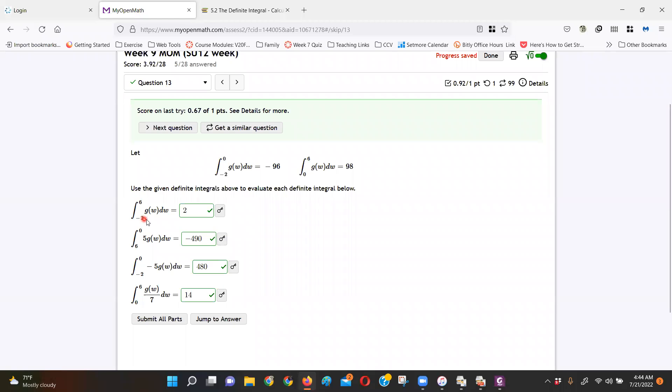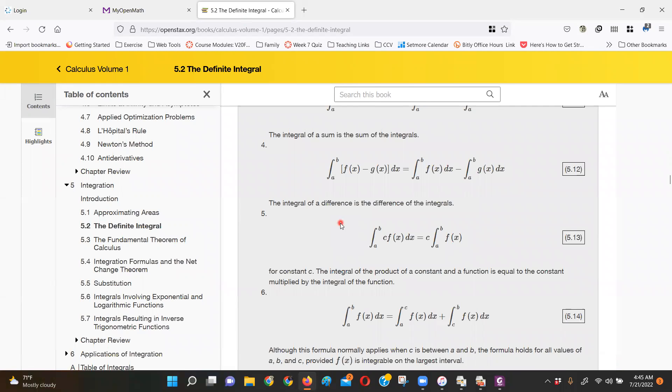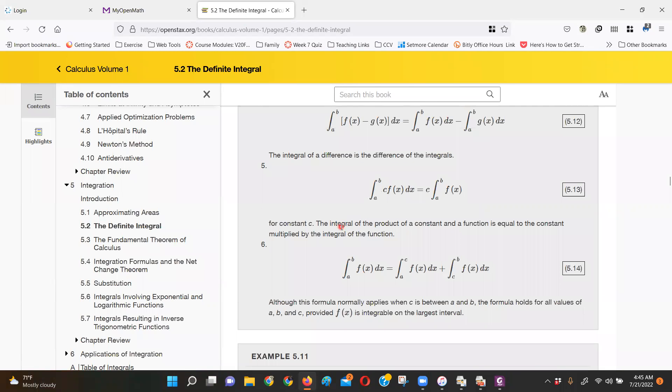So this first one is asking me to evaluate this derivative from negative 2 to 6, but they only gave me from negative 2 to 0, and then from 0 to 6. What they're asking me is to merge these two things together. So if you go look at that integral property table, you see how if I say A to B, you can split that integral anywhere you want.